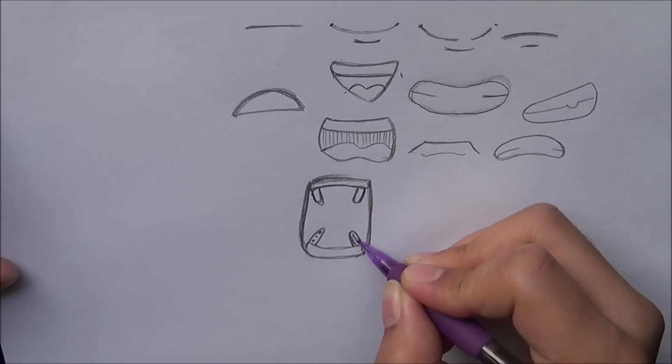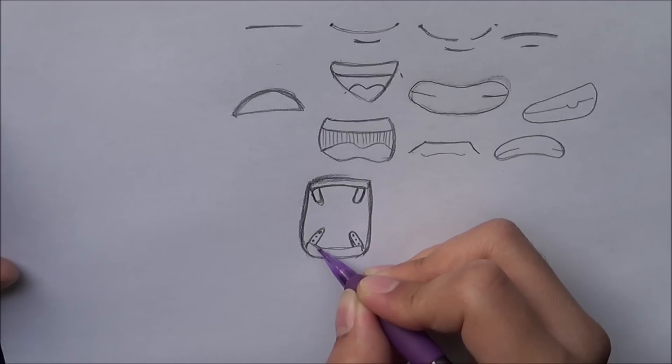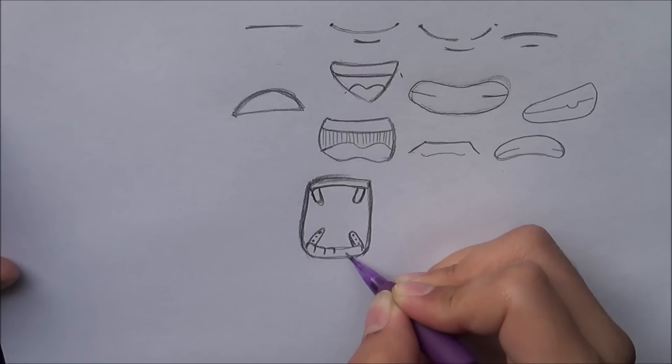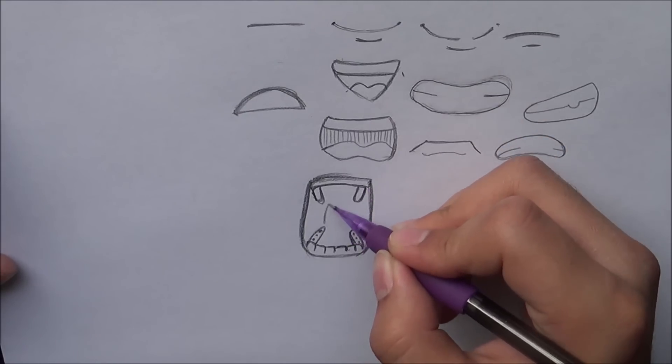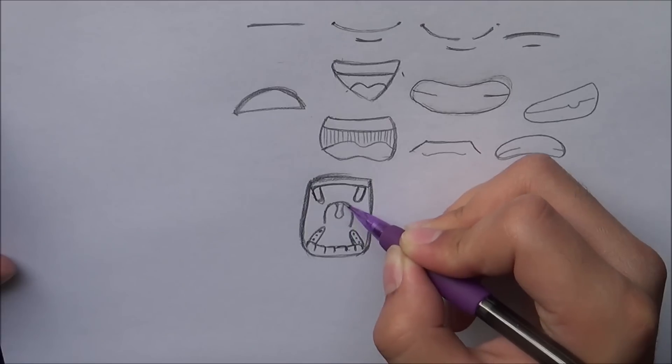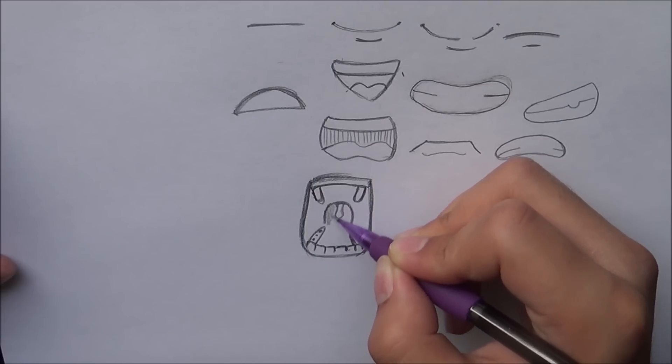You can actually even draw the teeth, just add circles for each tooth. The ones in the front, you can add lines here and make it look realistic. And in the back, you get the throat where it goes down.